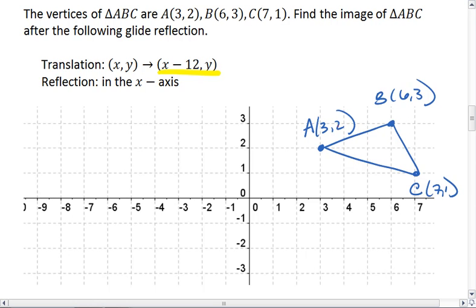So A is 3, 2. We want to subtract 3 minus 12. It's going to give us negative 9. So that puts A prime at negative 9, 2.